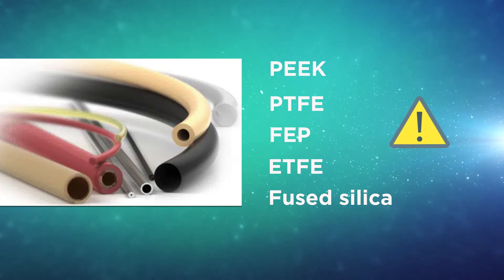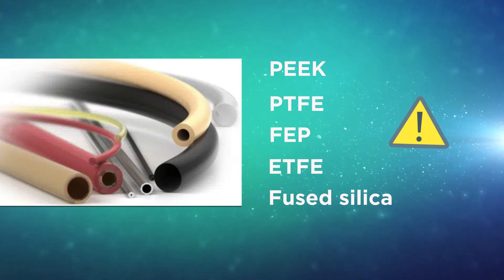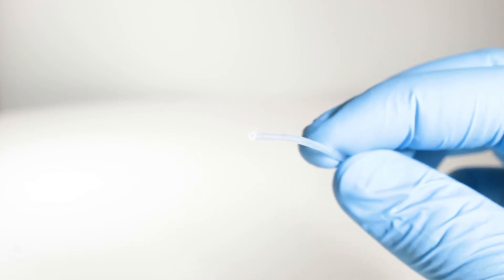Some of the most common materials for microfluidic tubing include PEEK, PTFE, FEP, ETFE, or fused silica. Each of them has a different level of biocompatibility and chemical compatibility regarding the fluids and chemicals driven inside.